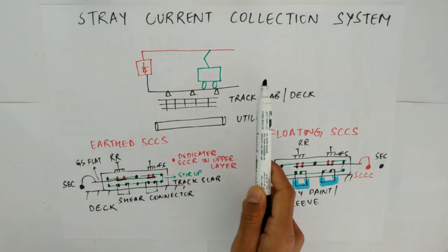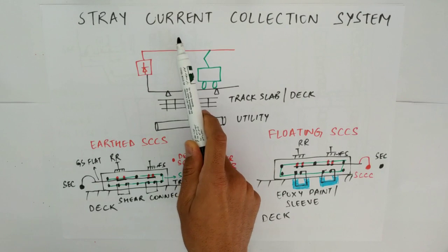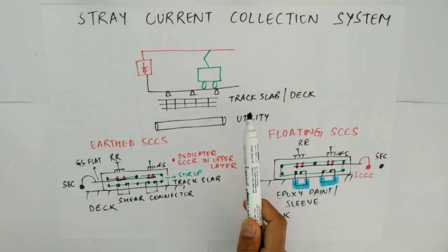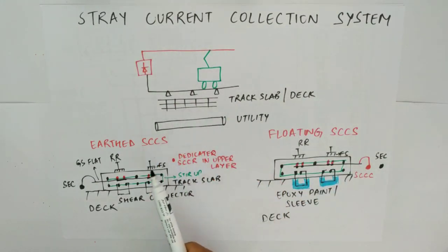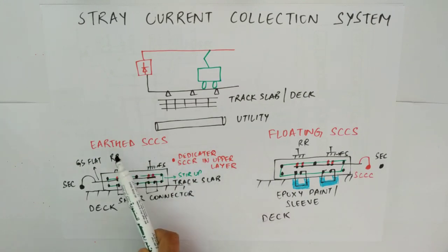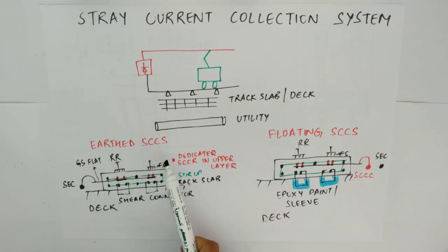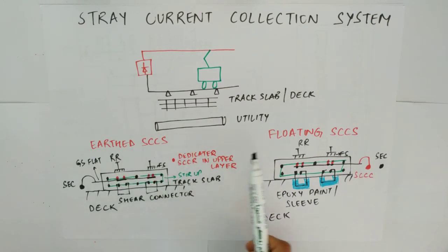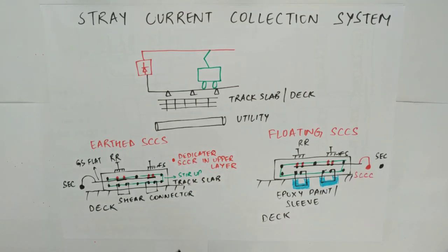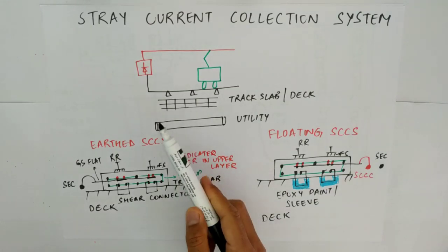First we'll understand why we require this SCCS, and then we'll understand the two types of stray current collection system — that is the earth stray current collection system and the floating SCCS. So let's go ahead and start.